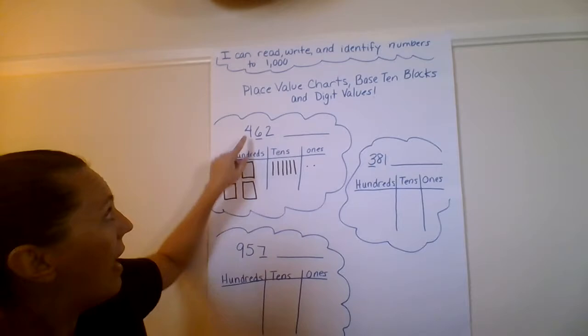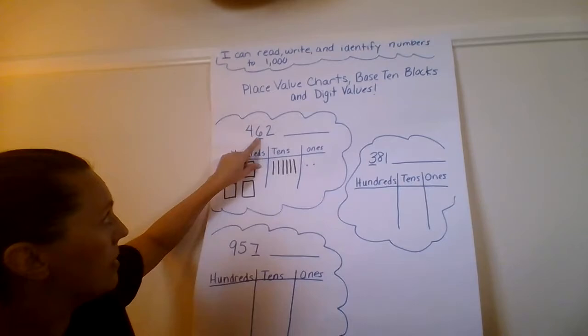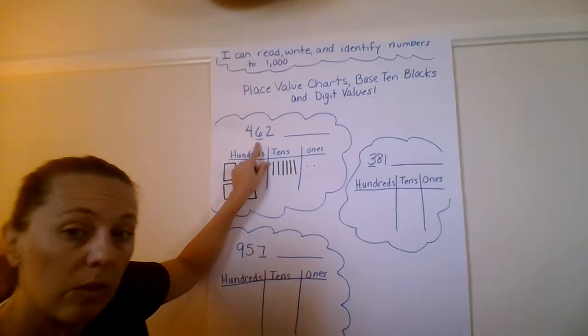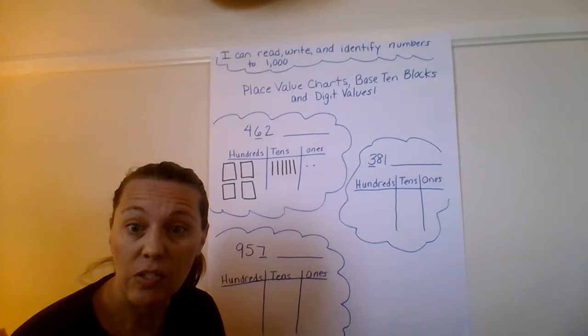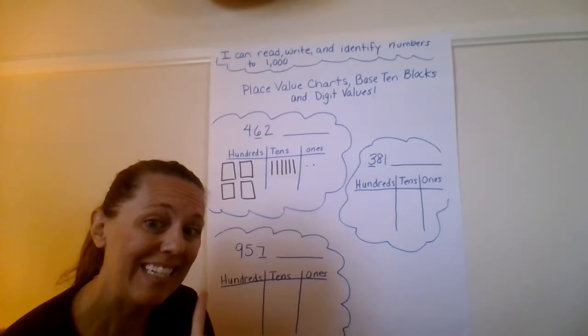Now, I've drawn my place value blocks in my place value chart. I've represented the digits by the pictures. Four hundreds, six tens, two ones. When I look at my number, there's a digit that's underlined. The page that we're practicing today says, what is the value of the underlying digit?